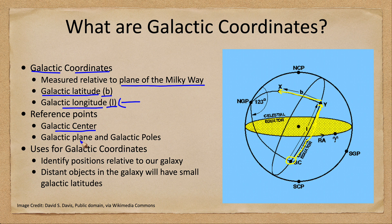The galactic poles — we talked about the plane of the galaxy, but there will be galactic poles just like there is a north celestial pole. There will be a north and a south galactic pole: the north galactic pole up here, and the south galactic pole down here.